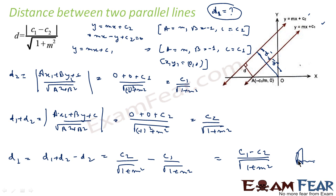Very simple. What we have done: both lines were converted into ax + by + c form. We got the values of a, b, and c. With x1, y1 = 0 in both cases, we found d2 = c1 / √(1 + m²), then d1 + d2 = c2 / √(1 + m²). Subtracting gives the distance between two parallel lines as |c1 − c2| / √(1 + m²).